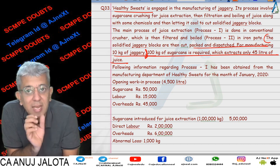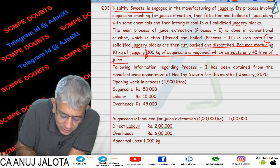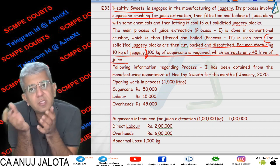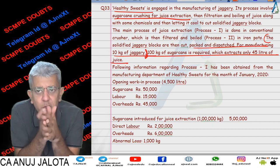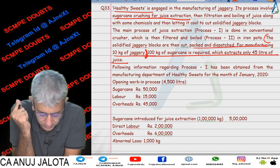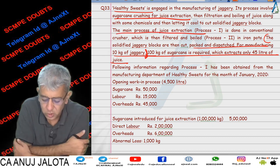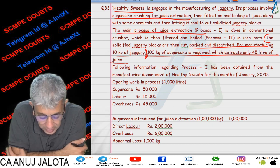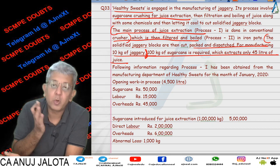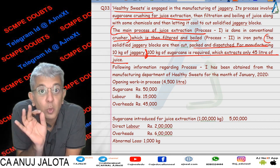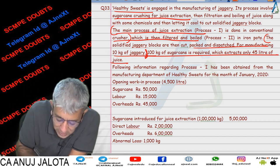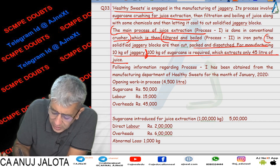To manufacture jaggery, first sugarcane will be crushed and the juice will come out. Once the juice comes out, we'll try to filter and boil it, and then solidify it to get jaggery. This question is all about Process 1, and in Process 1 only juice is coming out — nothing else. Once this juice comes out, it is filtered and boiled in an iron pot, but that belongs to Process 2.